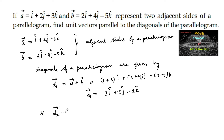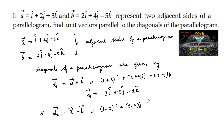The other diagonal d2 is given by a minus b, which equals 1 minus 2 of i, plus 2 minus 4 of j, plus 3 plus 5 of k, which equals minus i minus 2j plus 8k.